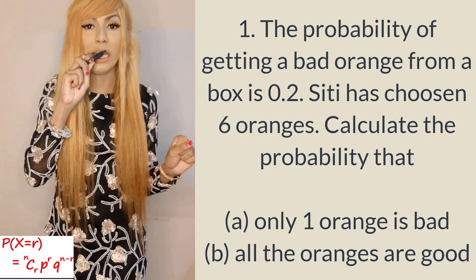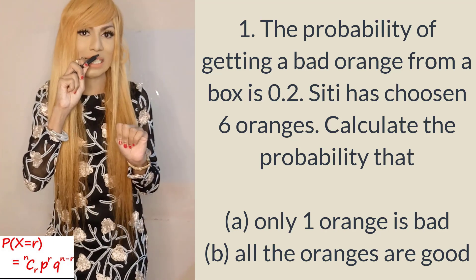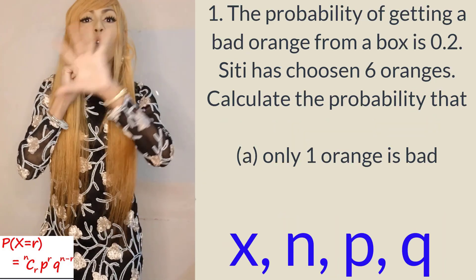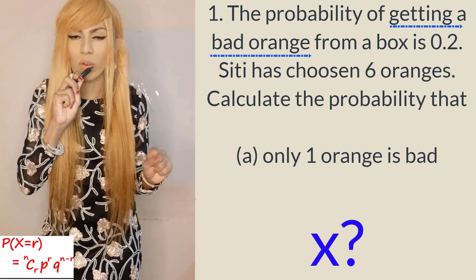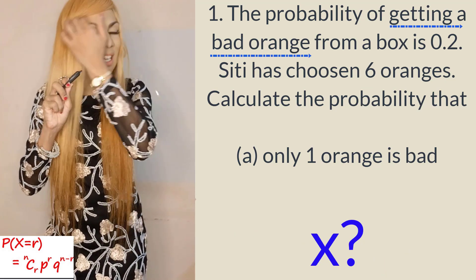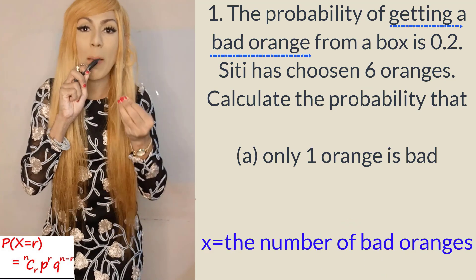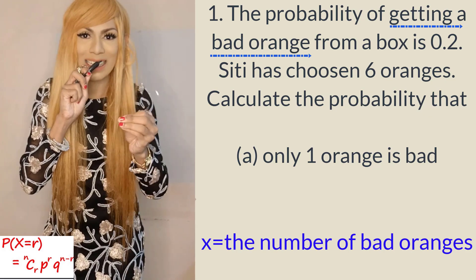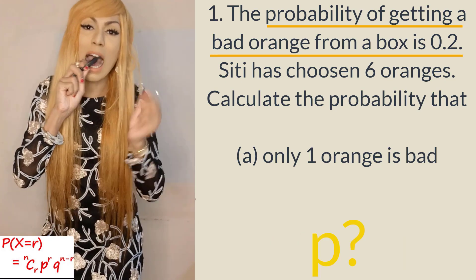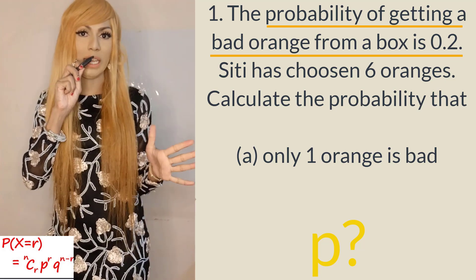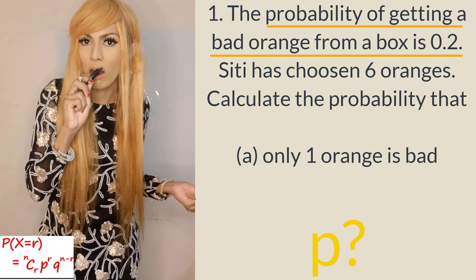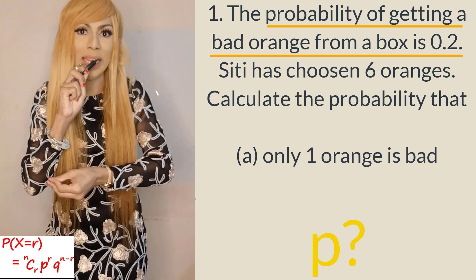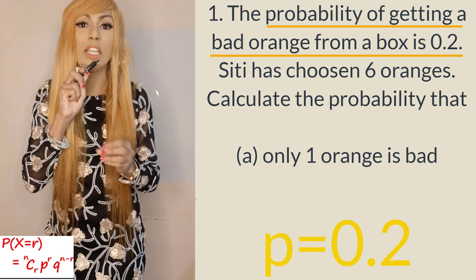For this kind of question, we need to identify four important things: X, N, P, and Q. X is what the event is about — in this case, the event is getting a bad orange. P is the probability of that event, so the probability of getting a bad orange is our P, which is 0.2.